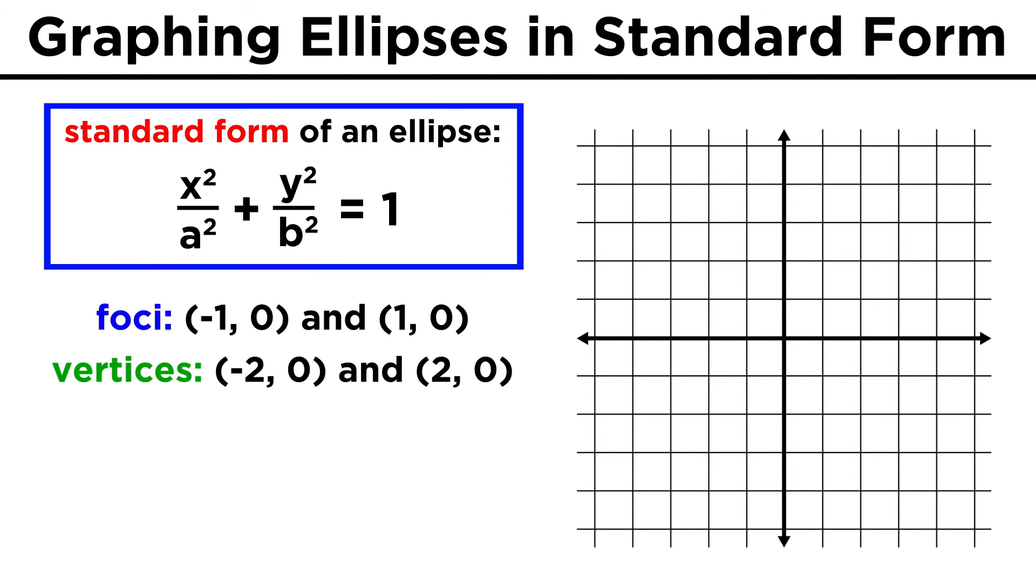We could also graph an ellipse if given information about its foci and vertices. Say the foci are at plus and minus one, while the vertices are at plus and minus two. That means that C is one, and A is two.